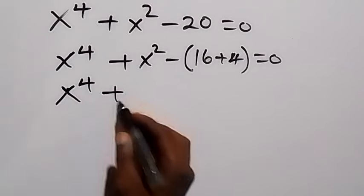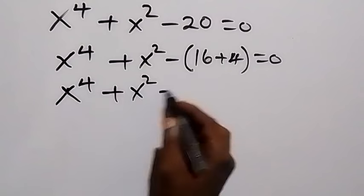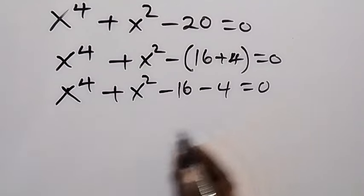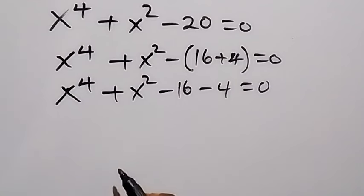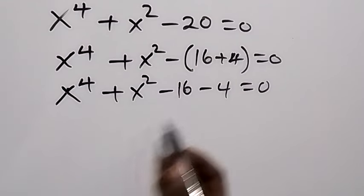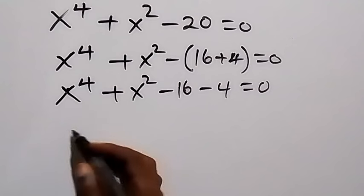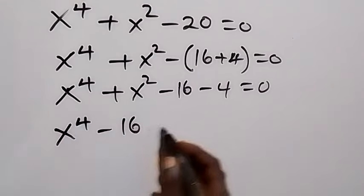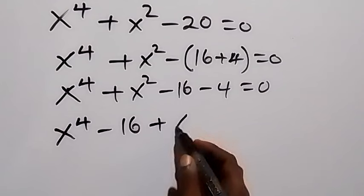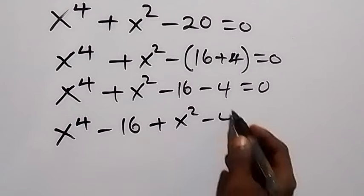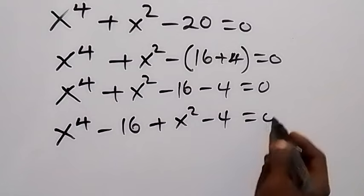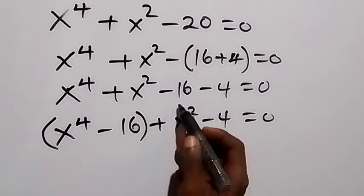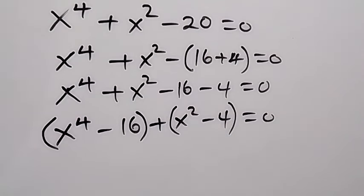From here, opening this bracket gives us x raised to power 4 plus x squared minus 16 minus 4, which is equal to zero. We then rearrange and bring 16 close to x raised to power 4, so we have x raised to power 4 minus 16, then plus x squared minus 4, equals to zero.